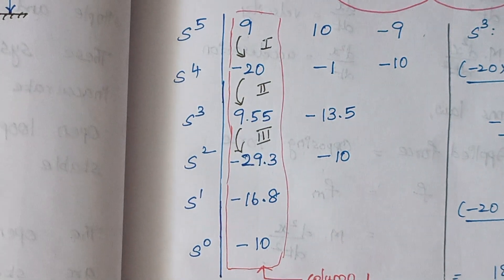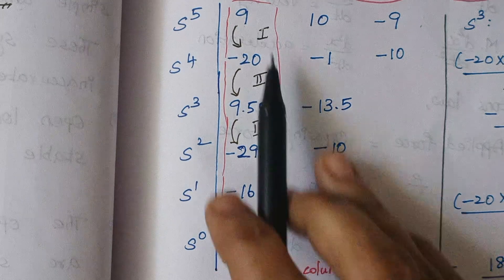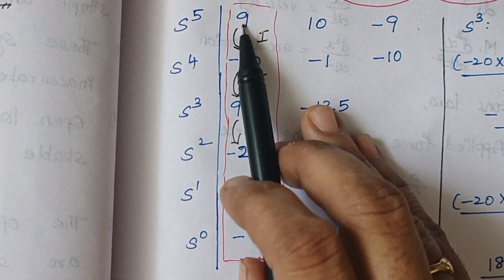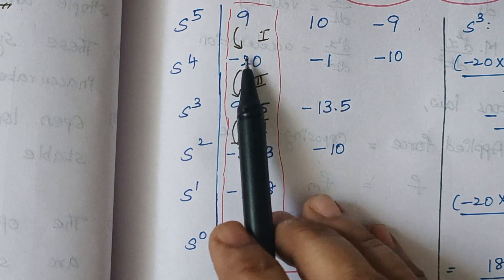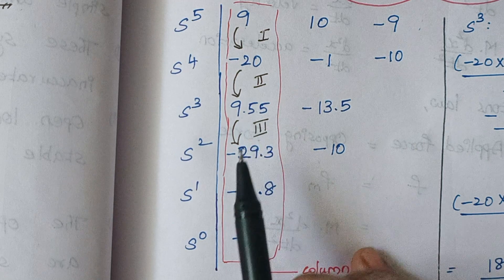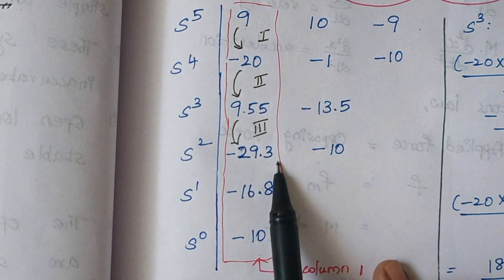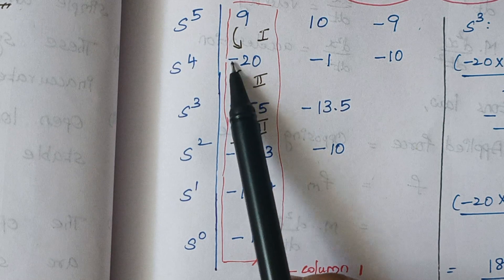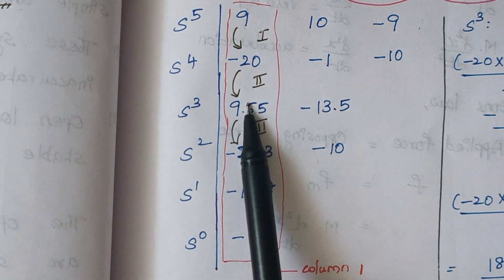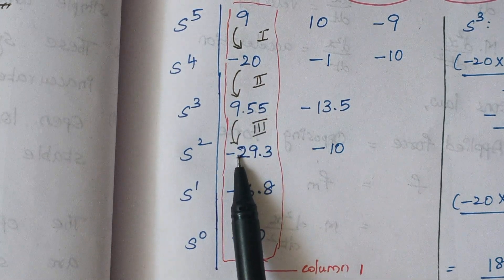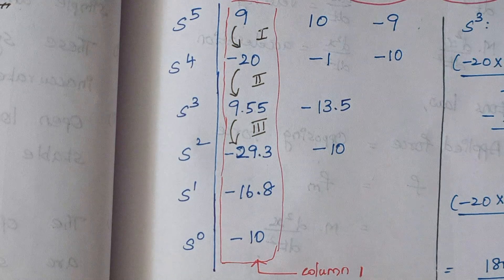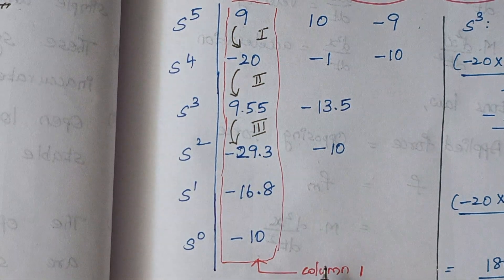Now we look at column one of the Routh array and observe the sign changes. The values are: +9, −20, +9.55, −29.3, −16.8, −10. From +9 to −20 is one sign change, from −20 to +9.55 is another, and from +9.55 to −29.3 is a third. There are three sign changes total. Since there is even a single sign change the system is unstable, and therefore the given system is unstable.